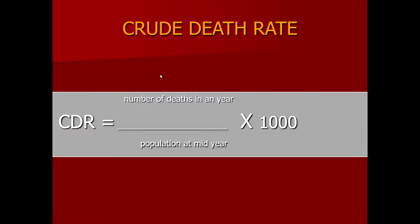The next important process affecting population is death. To assess the increase or decrease in population, we calculate crude death rates. The crude death rate is calculated on the total number of deaths registered in a defined geographical area in a defined specific time period. It is called crude because it does not give specification according to age group, gender distribution, or cause. For those purposes, we calculate age-specific, cause-specific, and gender-specific mortality rates. But for population growth change, we calculate crude death rates: total number of deaths divided by the total mid-year population into 1,000, with mid-year population taken on 1st of July.